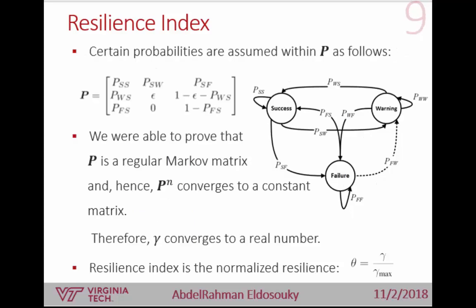We made some assumptions in this probability transition matrix. We assumed P_FW — the dashed line — to be zero, meaning that once the infrastructure is in a failure state it should be recovered to a success state, not a warning state. This assumption is made for analytical tractability, and the system still holds for other values of P_FW. We also assumed P_WW, the probability of staying in the warning state, to have a known value depending on actions taken on the system.